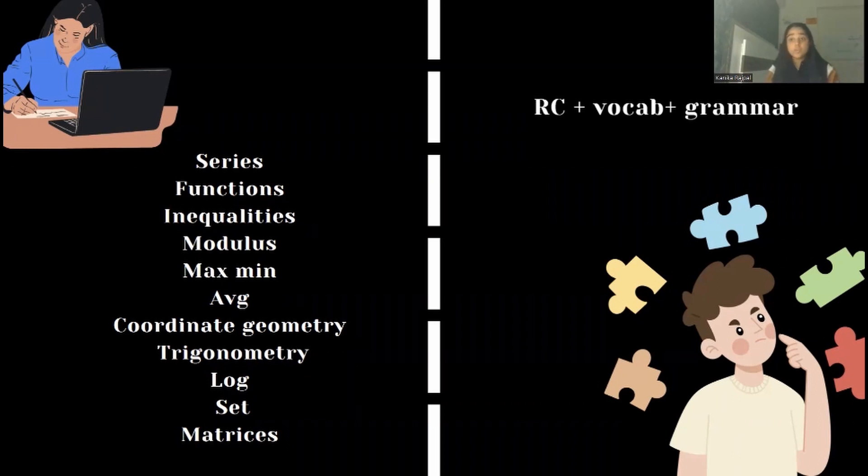As far as VRC is concerned, you don't need to invest a lot of time in that because VRC is not something you can strengthen in the last few months. It comes with practice in general, whatever practice you've done throughout your entire school, not just six months of preparation. There are essentially three elements: RC, vocab, and grammar. When you're doing RC, you're actually strengthening both your vocab and grammar, so you can be very sorted when it comes to VRC.